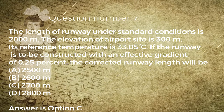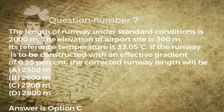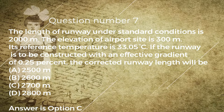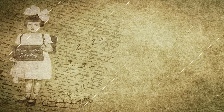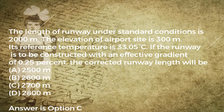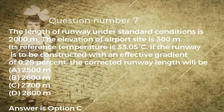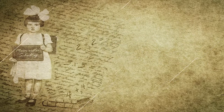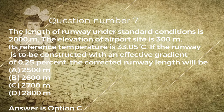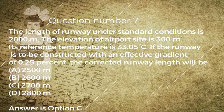Question number seven: the length of runway under standard conditions is 2,000 M. The elevation of airport site is 300 M and its reference temperature is 33.05 degrees Celsius. If the runway is to be constructed with an effective gradient of 0.25%, the corrected runway length will be: A) 2,500 M, B) 2,600 M, C) 2,700 M, D) 2,800 M. Answer is option C.